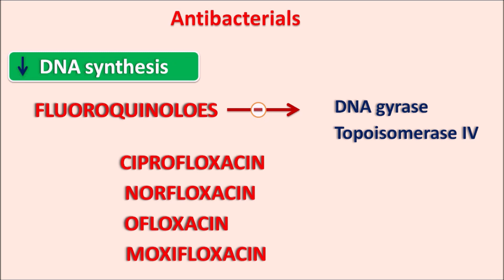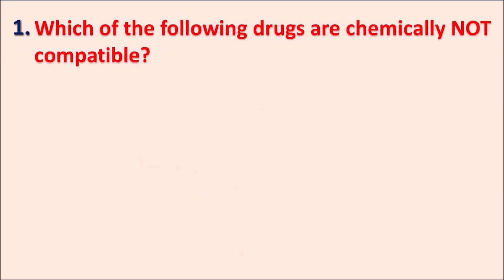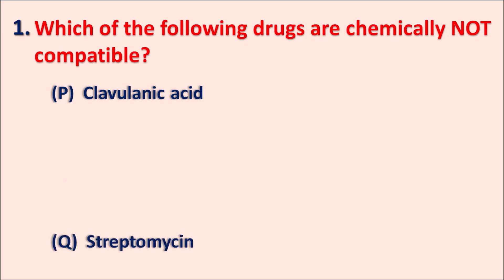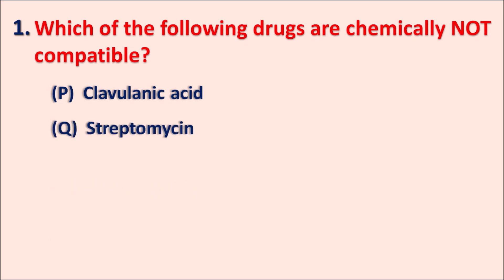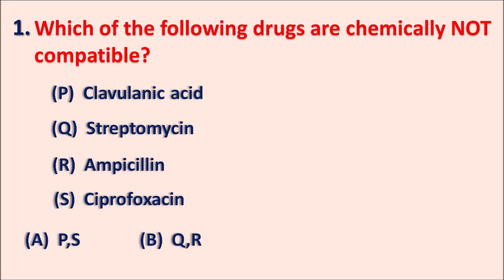Now let us discuss important points in a question-and-answer format. Question one: Which of the following drugs are chemically not compatible? Options: P — clavulanic acid, Q — streptomycin, R — ampicillin, S — ciprofloxacin. Select the two drugs that are chemically not compatible. Options: A — P and S, B — Q and R, C — R and S, D — P and R. The right answer is Q and R.